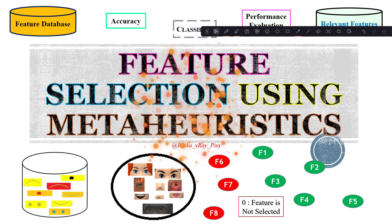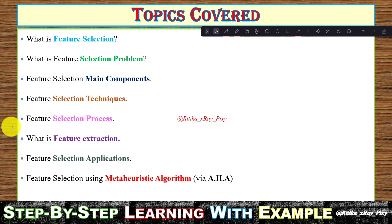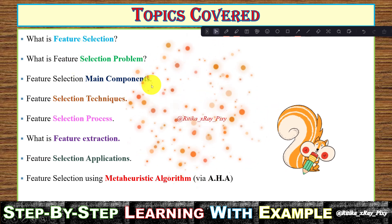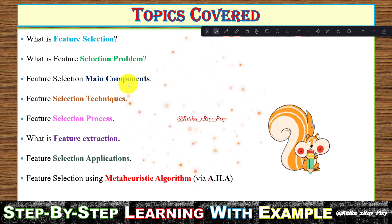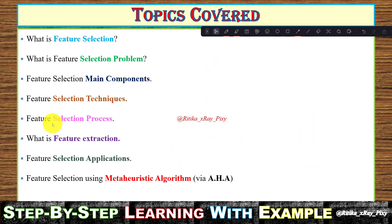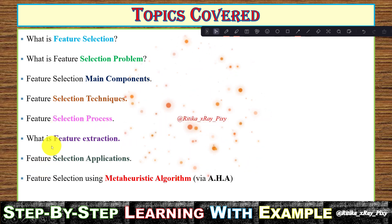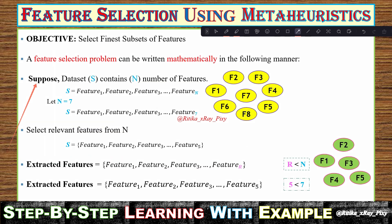In this video we will try to understand how we can perform feature selection using meta-heuristics. Topics covered include: what is feature selection, the feature selection problem, main components used for feature selection, feature selection techniques, the feature selection process, and feature selection applications. We will also cover what feature extraction is and how to perform feature selection using a meta-heuristic algorithm.